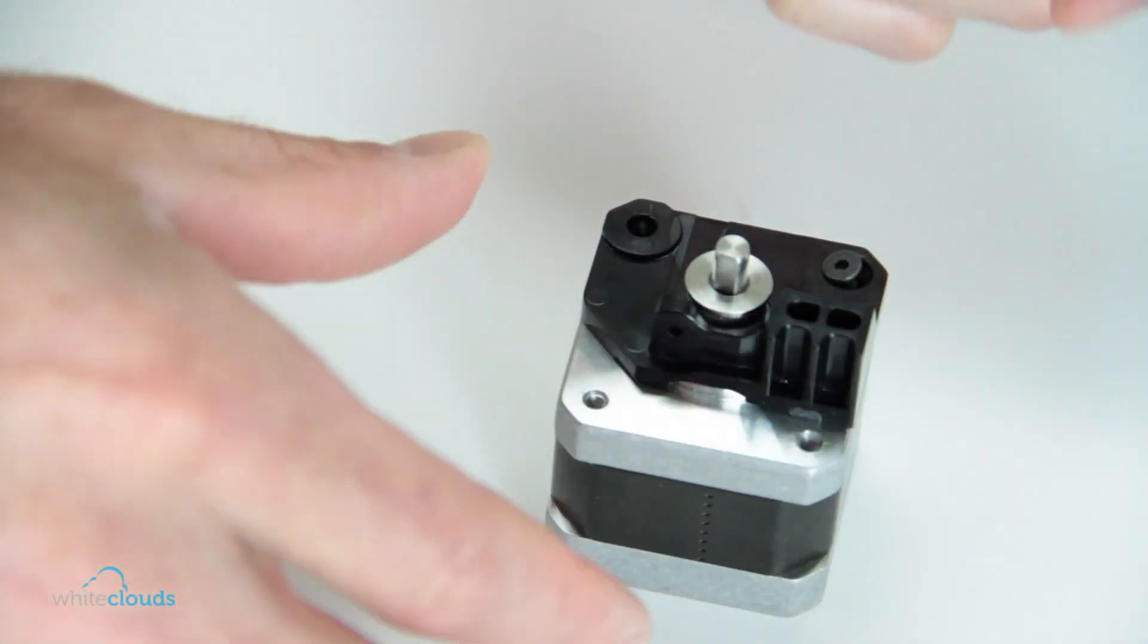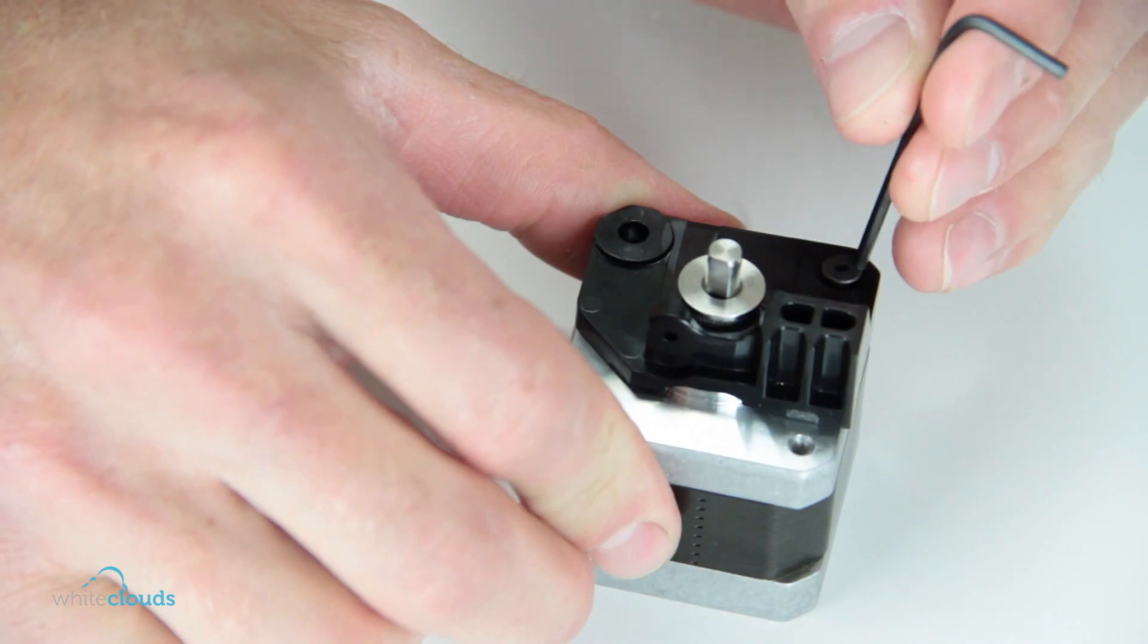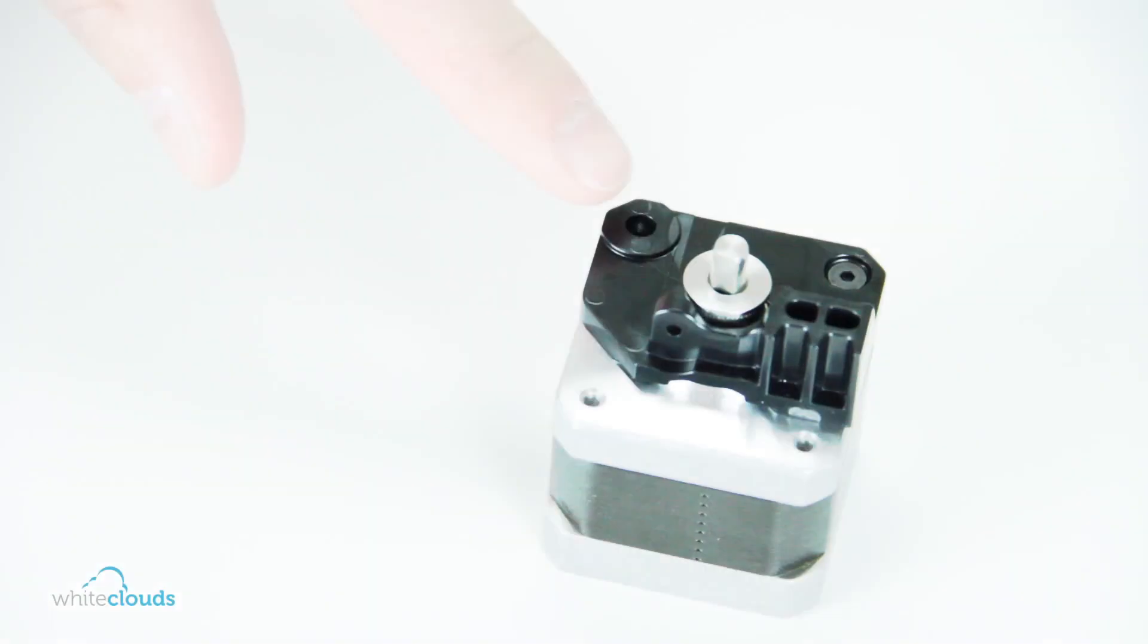Bolt the new drive block base to the motor with the black flathead bolt, while making sure the other hole from the shoulder bolt lines up.